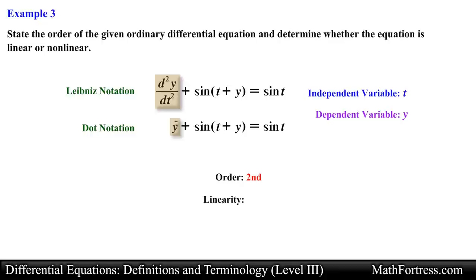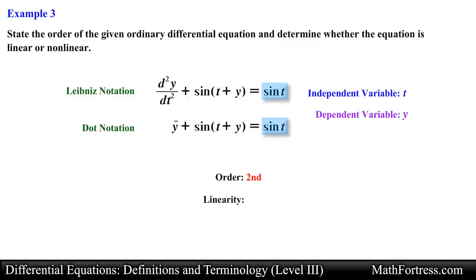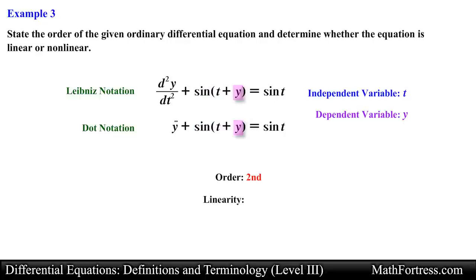Now let's check linearity. Inspecting the derivative, we see it is raised to the power of 1, and this derivative contains no products so we can skip that step. For transcendental functions, the sine function on the right side is written in terms of t, but the sine function on the left side contains the dependent variable y inside its argument. This automatically makes this ODE nonlinear, so it is classified as a second order nonlinear ODE.